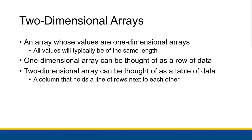A two-dimensional array is an array whose values are actually one-dimensional arrays rather than being non-array values. All of these array values will typically be of the same length — that's not necessarily always the case, but usually the ones we work with are where all the values are the same length. It's kind of rectangular in a sense.